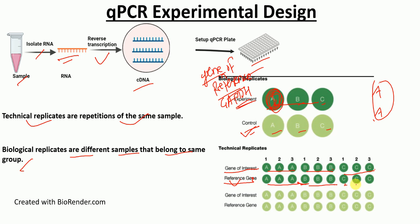The same is true for the control sample — groups of three technical replicates per biological replicate, with one, two, and three biological replicates. This is how you design your QPCR plate: you will have your gene of interest, reference gene, and your samples, along with the QPCR mix.